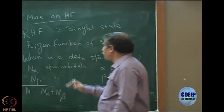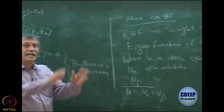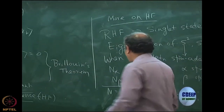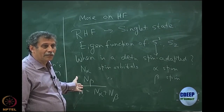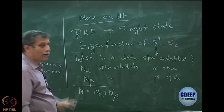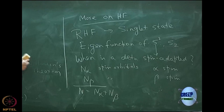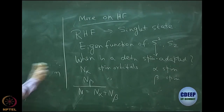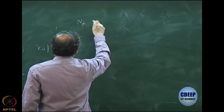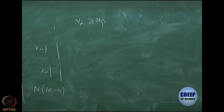We have n_alpha number of alpha spin and n_beta number of beta spin, such that the total n equals n_alpha plus n_beta. For RHF, n_alpha equals n_beta and each is n/2. In general, I can have n_alpha alpha spin and n_beta beta spin. The theorem assumes n_alpha is greater than or equal to n_beta.